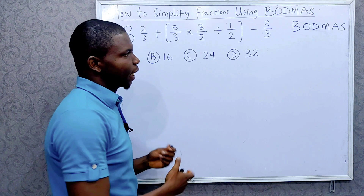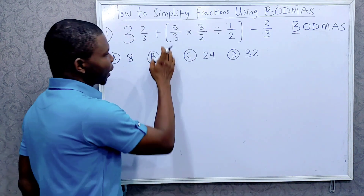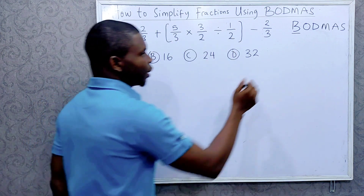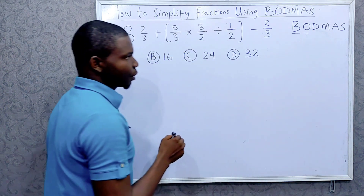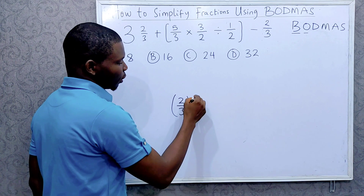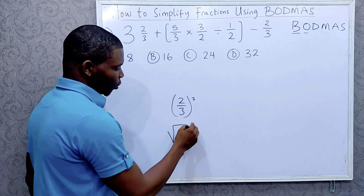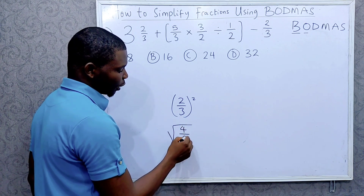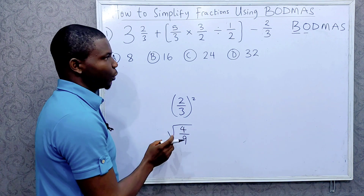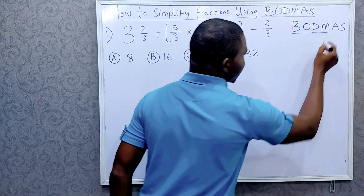Many of us know BODMAS but we don't know how to apply it. BODMAS tells you to do the brackets first — anyone in the brackets, you deal with them first. The next one is Order or Exponents. So if you have something like 2 over 3 squared, this 'squared' is the Order or Exponent. Or the square roots of 4 over 9 — this square root is the Order or Exponent.